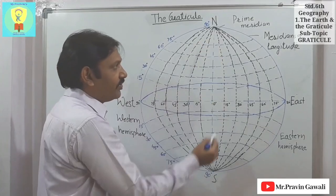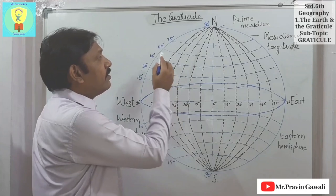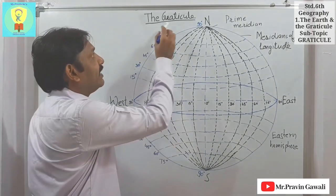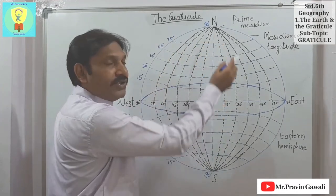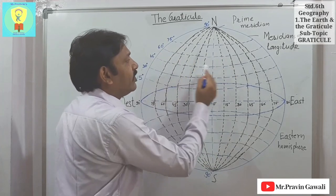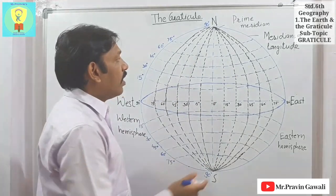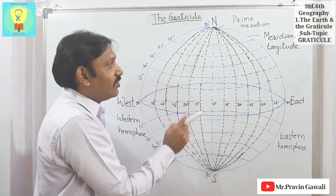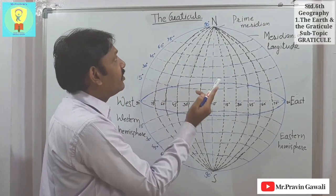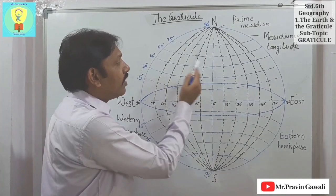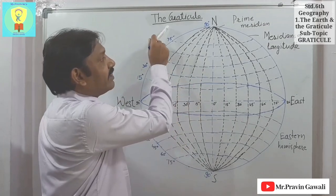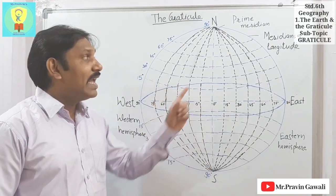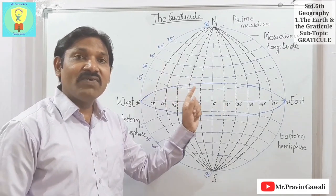See now carefully — the meridians of longitude and the parallels of latitude together form a net on the globe. Isn't it like a net? Together, the meridians of longitude and the parallels of latitude form a net on the globe. That net is called the graticule.